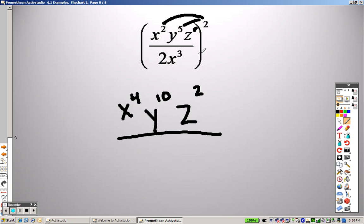2 squared over this needs to go through to the bottom. So it's 2 squared, and it is x to the 6th. And remember, 2 squared I can rewrite as just 4.